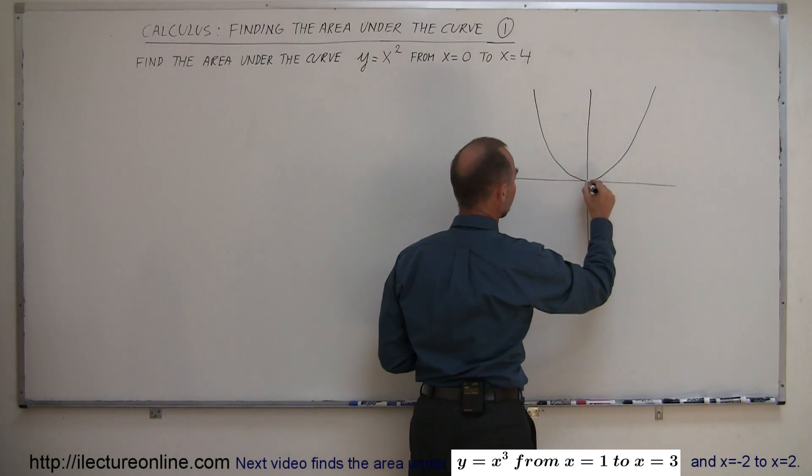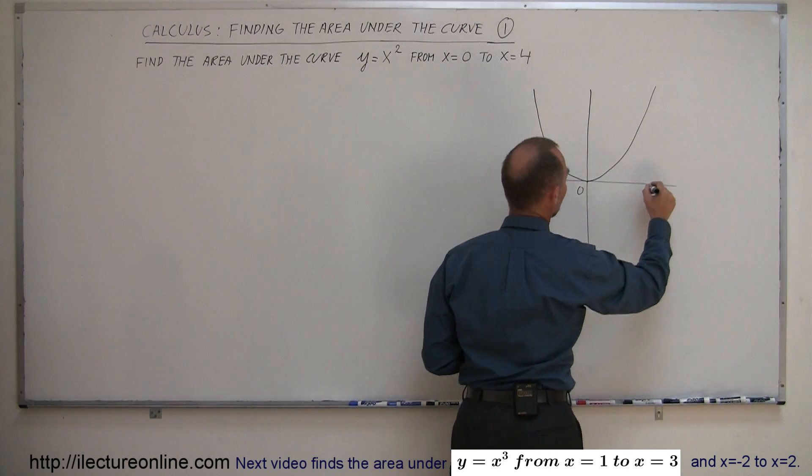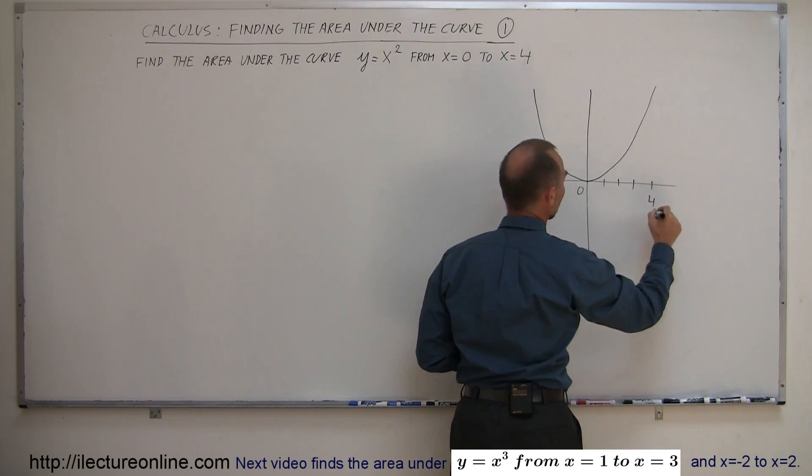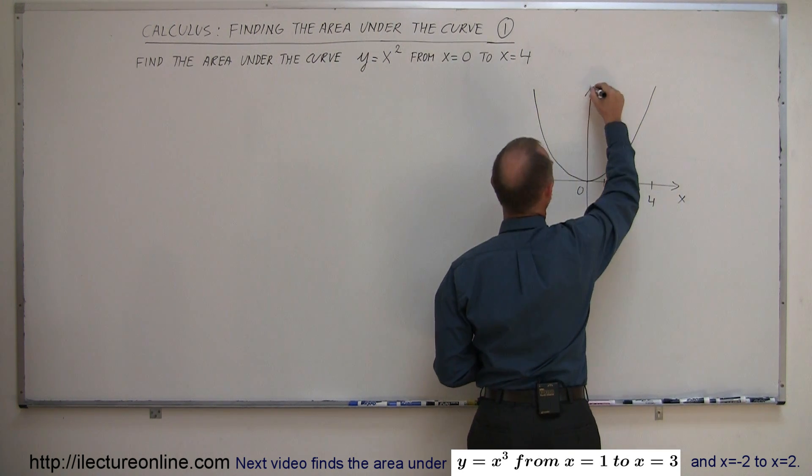We're finding the area from x = 0, which is right here, to x = 4, which is about right there. So 1, 2, 3, 4, there's the x-axis, there's the y-axis.